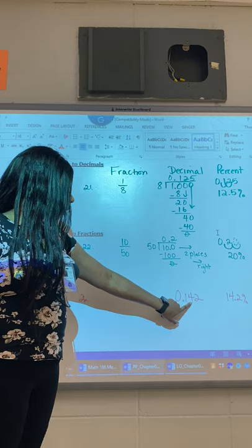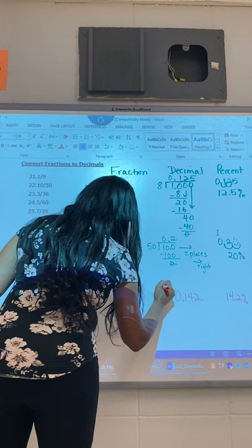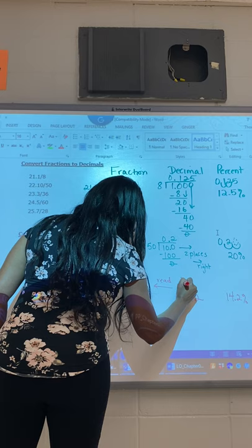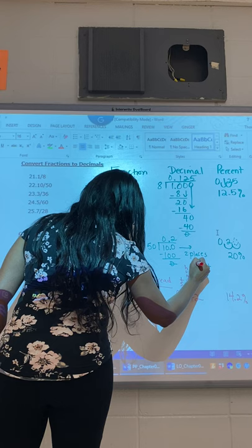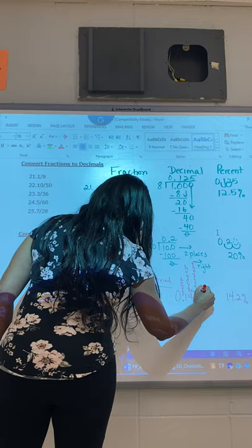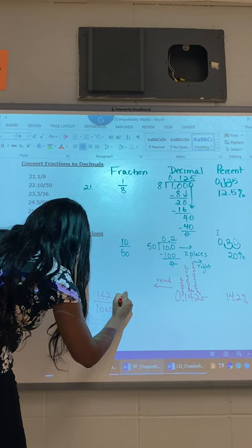This is tenths, hundredths, thousandths. So if it's in the thousandths place, I want you to do 142 over 1,000. That's it. It's how you will read it out loud. And that's when the place value comes in. This is tenths, this is hundredths, this is thousandths. You better know your place value. So this would be 142 over 1,000, and then I will need you to help me reduce my fraction.